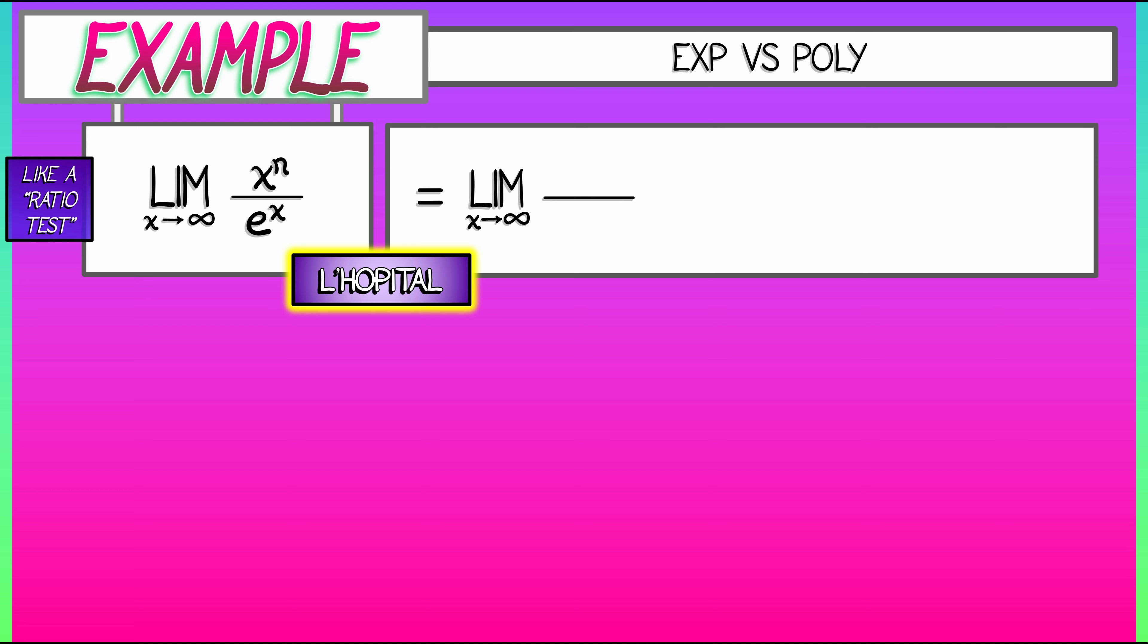So, in the numerator, we have the derivative of x to the n, which is n times x to the n minus 1. In the denominator, we have e to the x. Now, this is still improper. It's still giving you infinity over infinity, unless n is equal to 1.